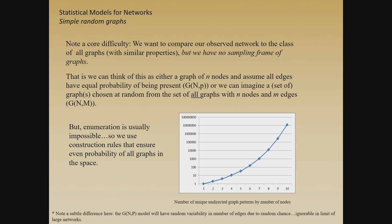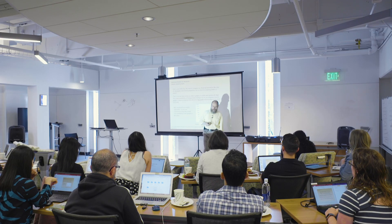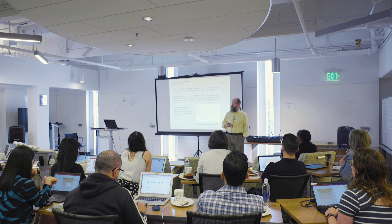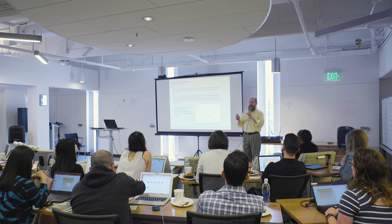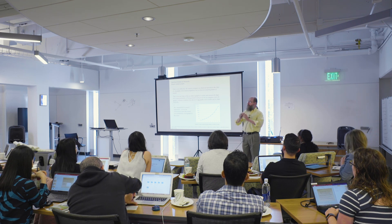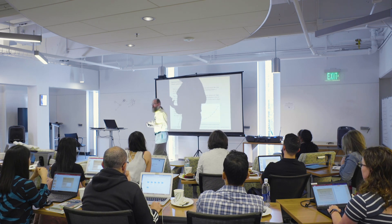There are two ways of thinking about this. In the math world you can think about a graph of size n with an edge probability p, or a set of all graphs of size n with m edges. For our standpoint they're about the same — you can imagine thinking about the network you've observed as one draw from the population of all networks of the same size as the network you've observed.